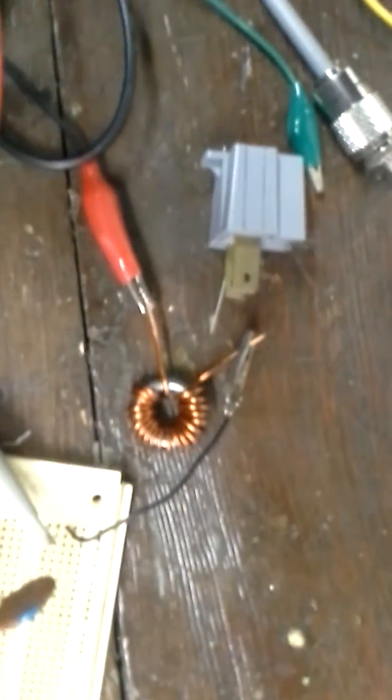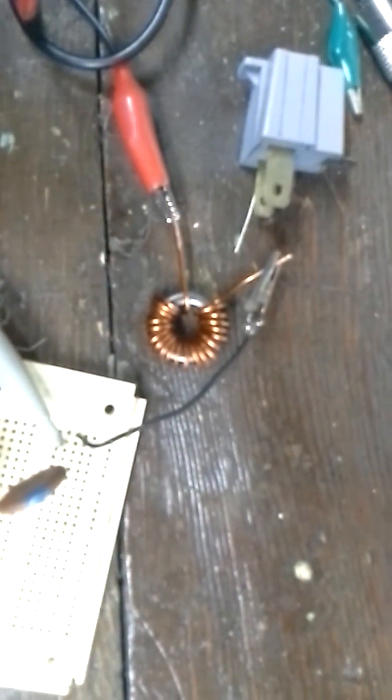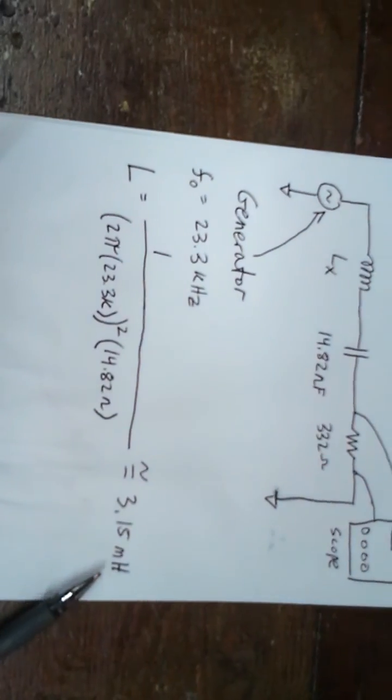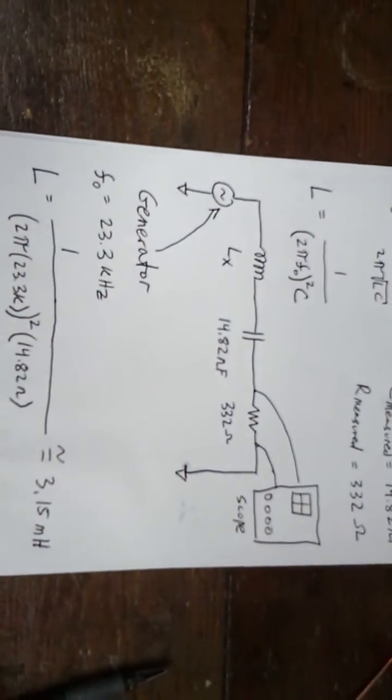And this is the inductor, by the way. I just wound it on a toroid core that I had lying around. So there you go. That's how you find the inductance of an inductor using the resonance method.